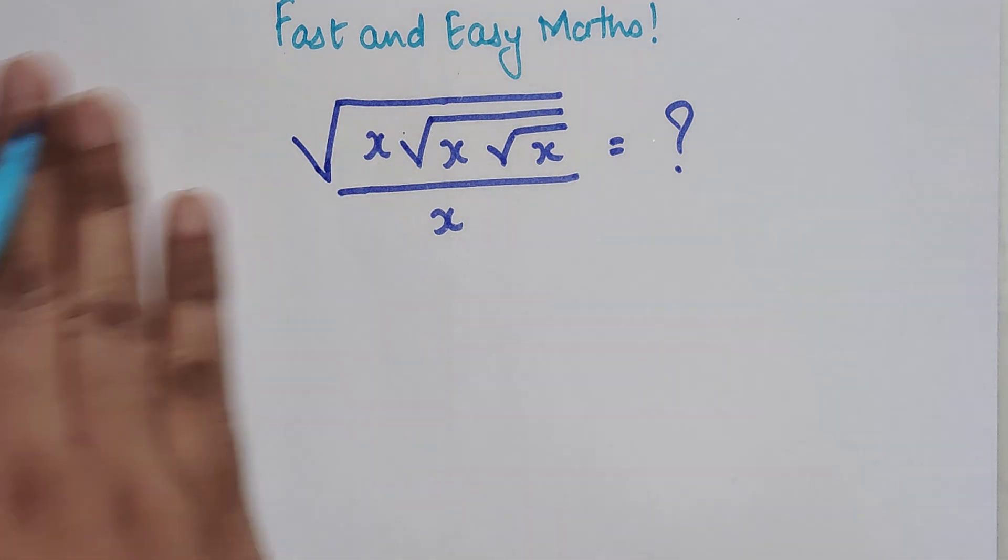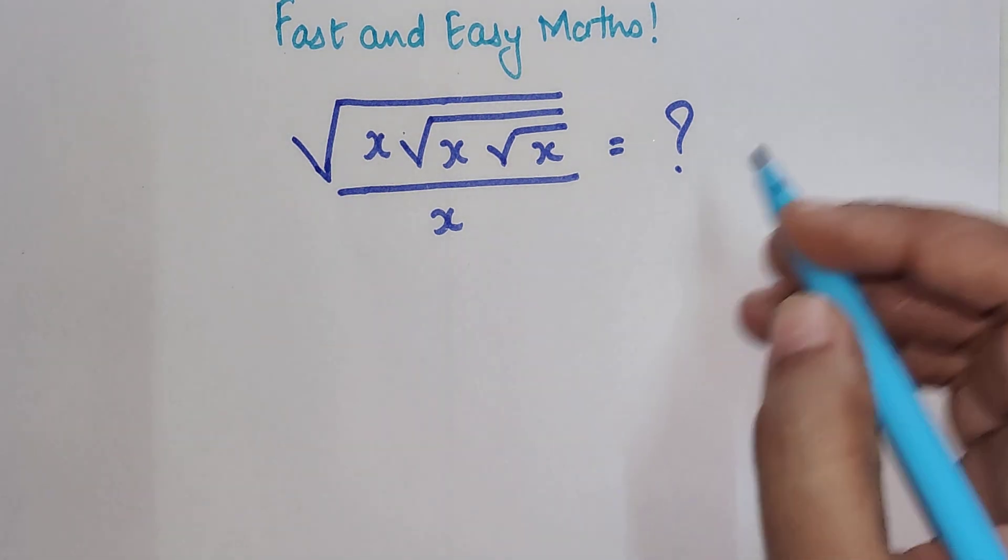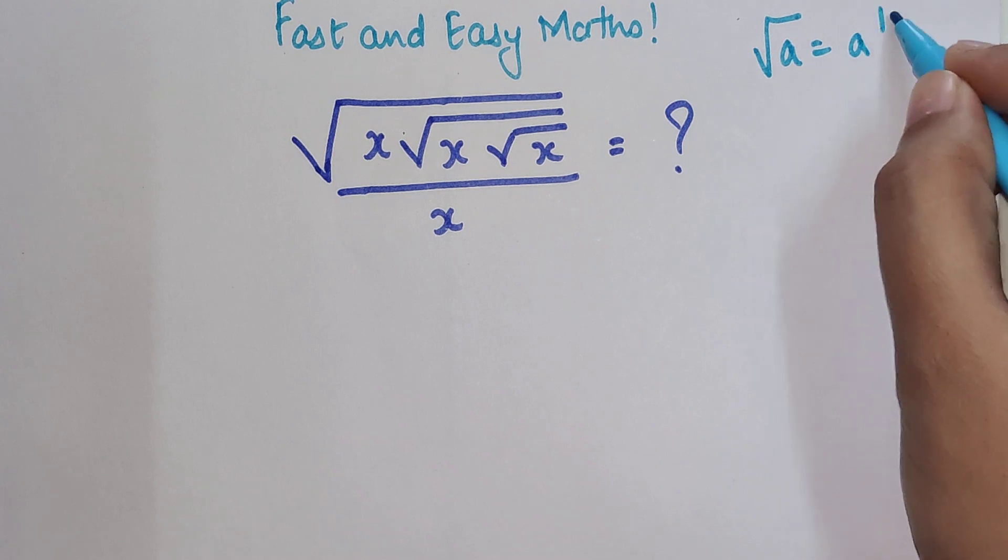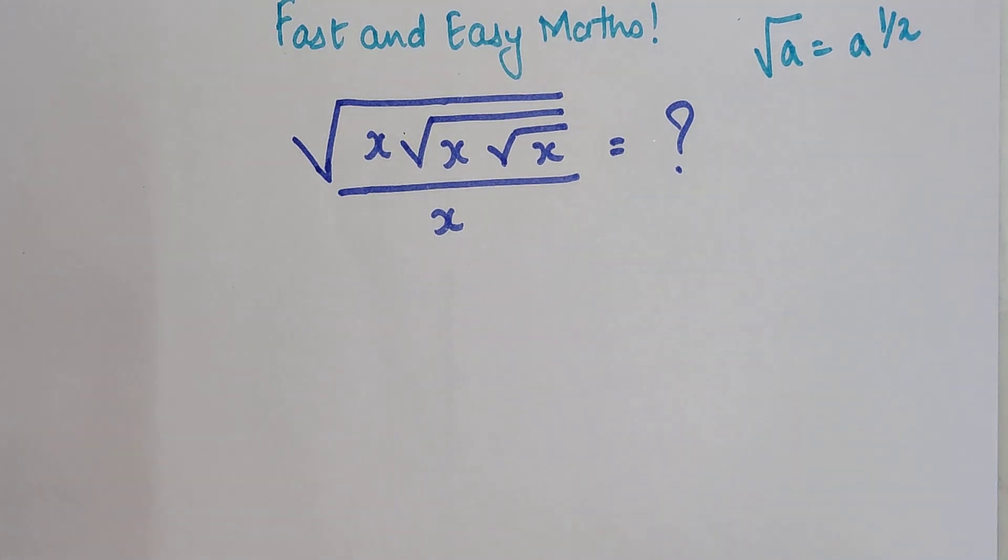So whenever you come across something like this, you have to remember that anything under a root can always be written as that number raised to half.